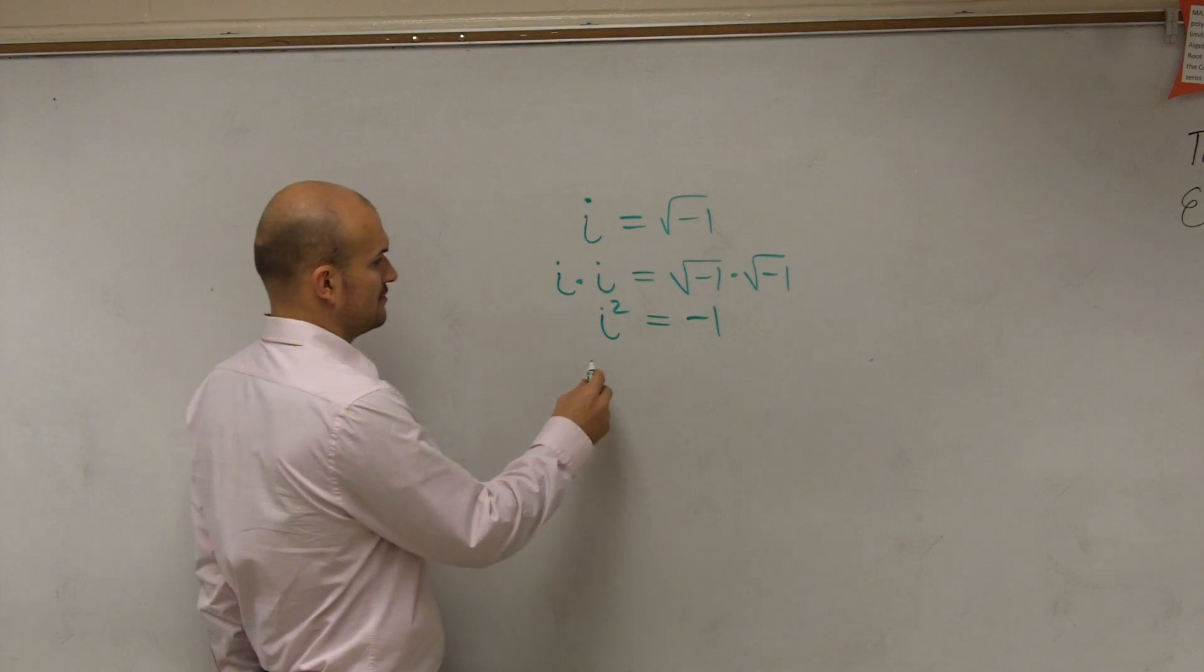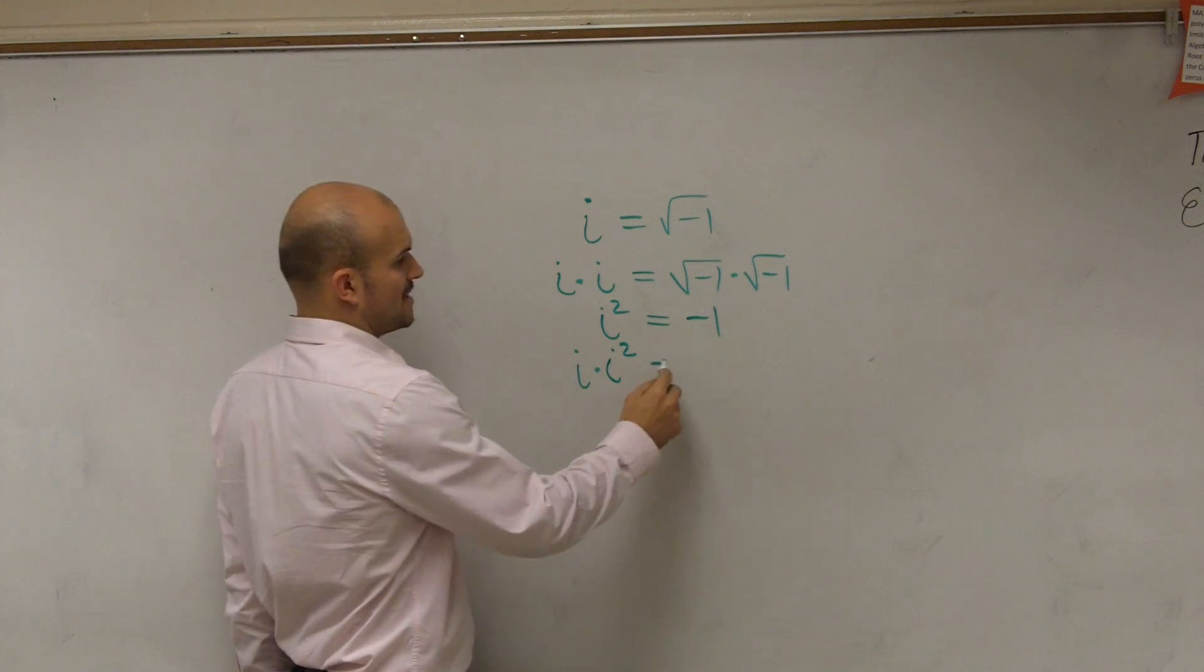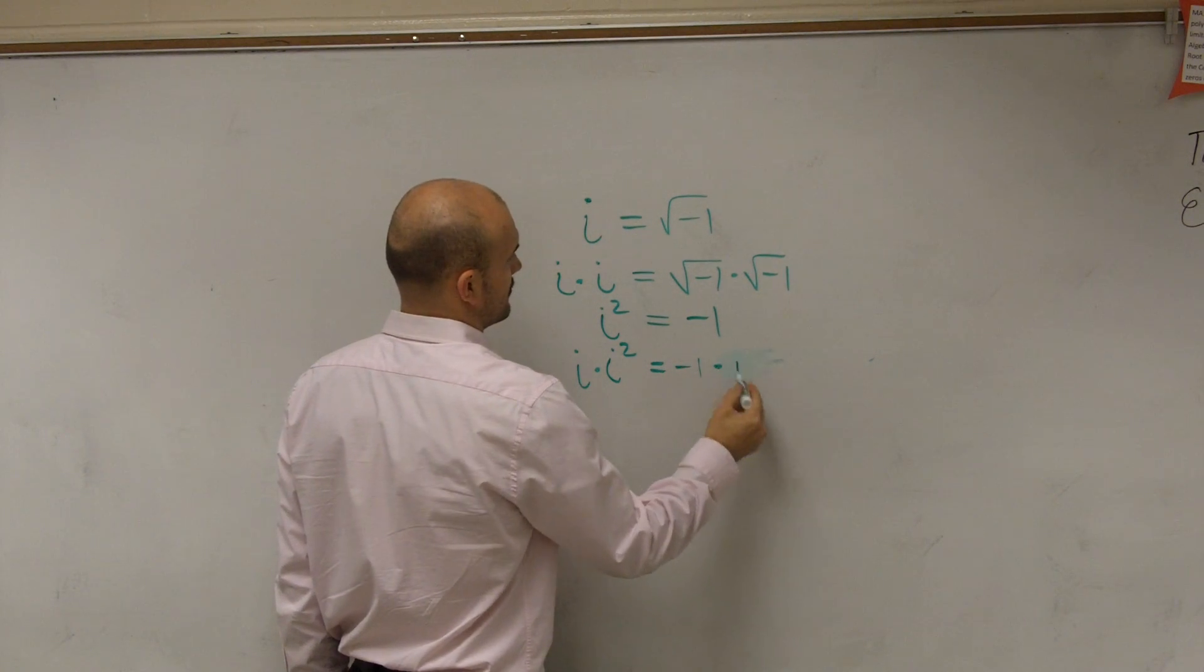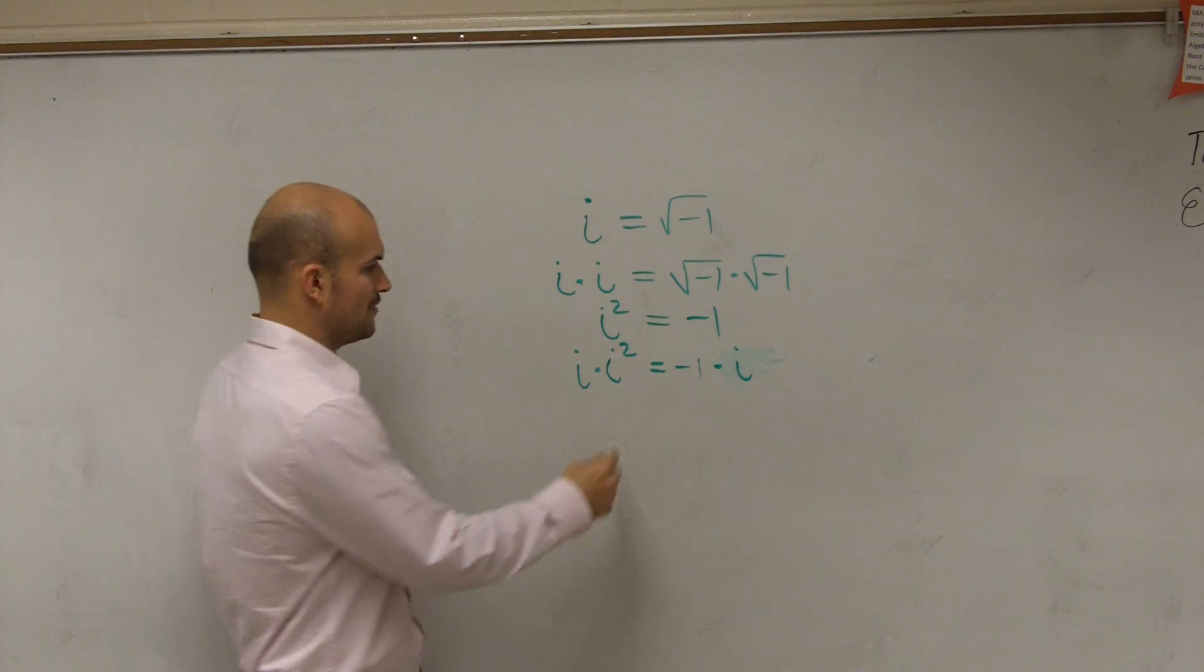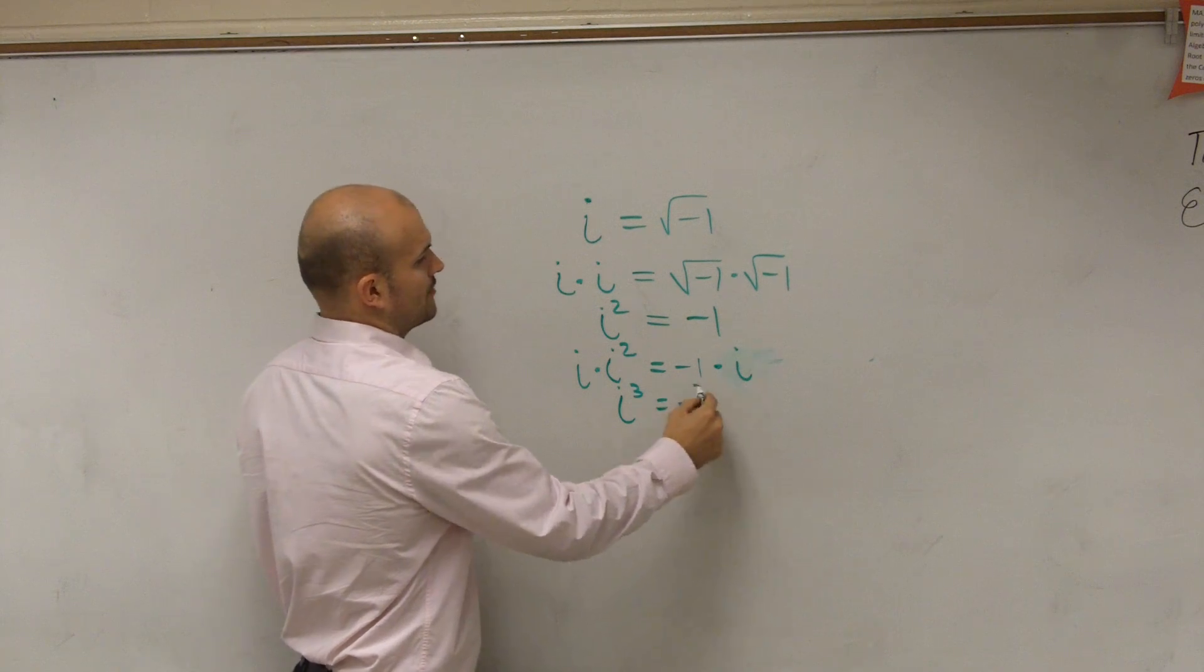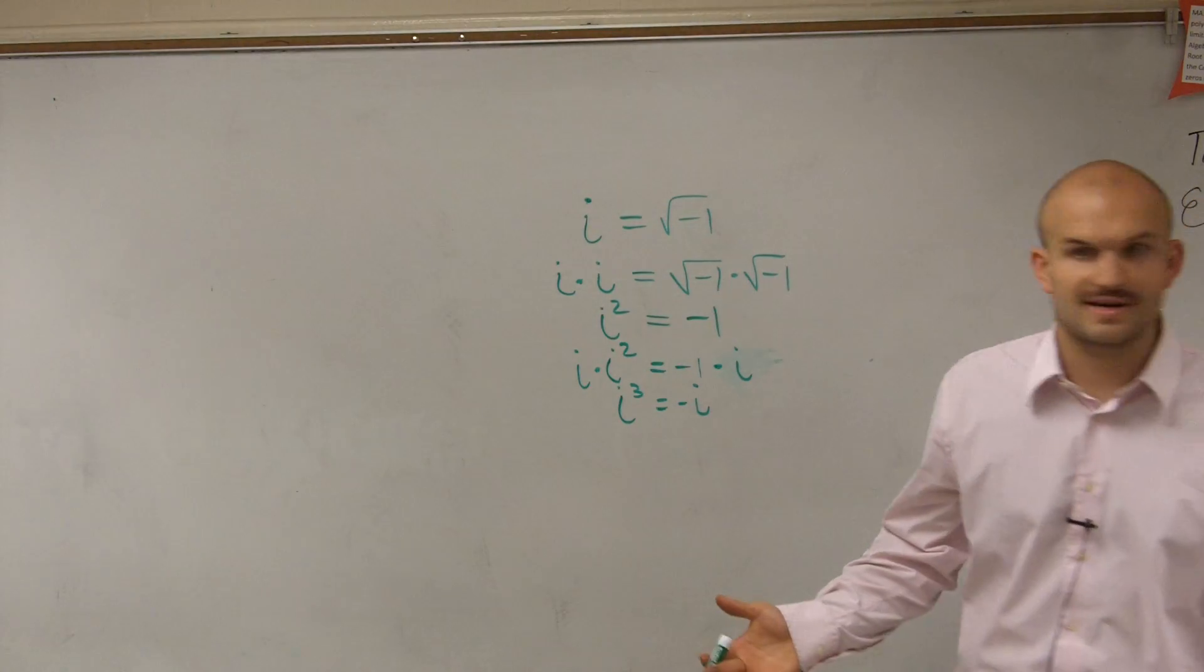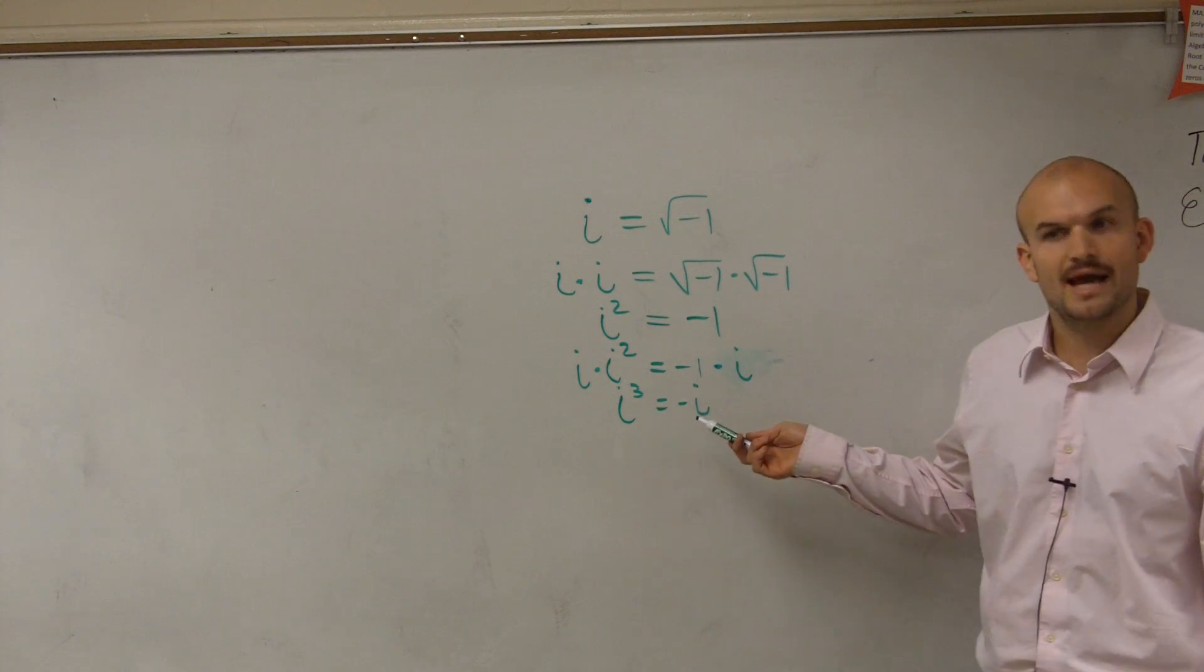Now, let's multiply by i again. So that's the same thing as doing negative 1 times i. So what if I multiplied an i on both sides again? Well, that would leave me with i cubed is equal to negative i. So if I said to you, what is the value of i, you say the square root of negative 1. And if I said what's the value of i cubed, you could say, well, that's negative i.